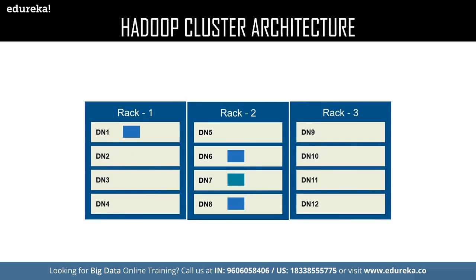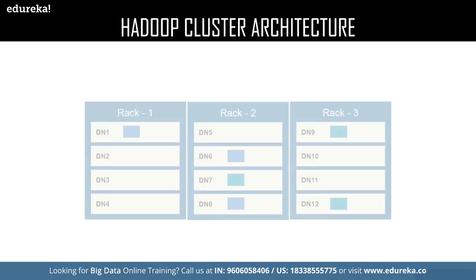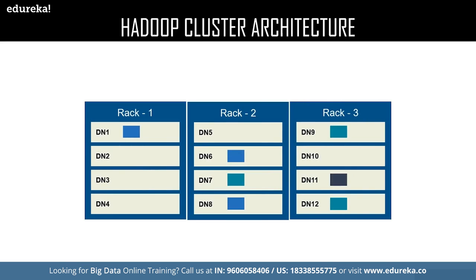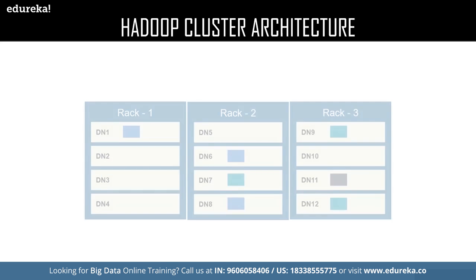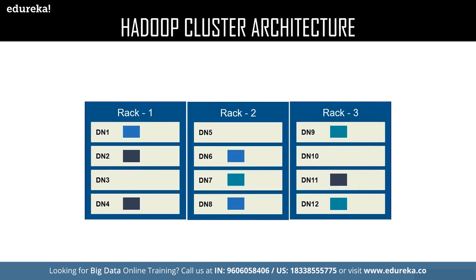Now let us deal with a different block. We have a new block in rack number two, data node seven — this is the local rack for that data block. The replicas of data node seven are stored in the remote rack, which is rack number three, in data node nine and data node twelve. We also have a new data block stored in data node eleven, where rack three is the local rack. The replica blocks of data node eleven are stored in the remote rack, which is rack number one, in data node two and data node four.